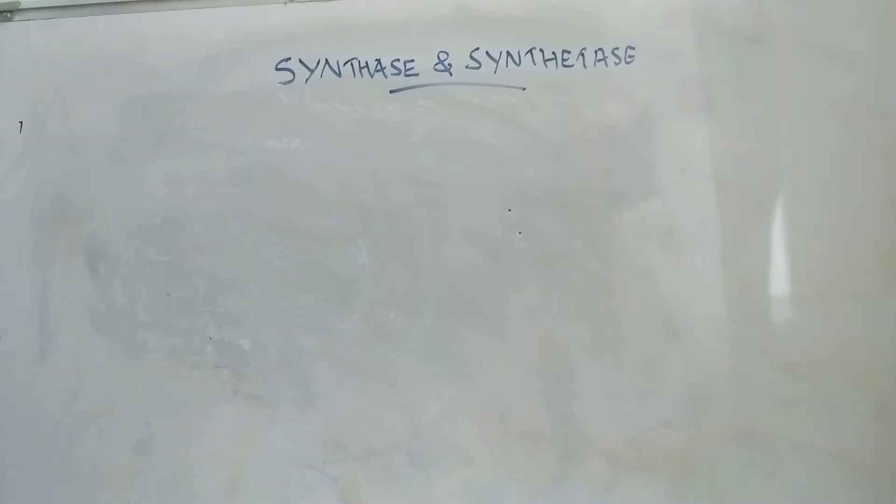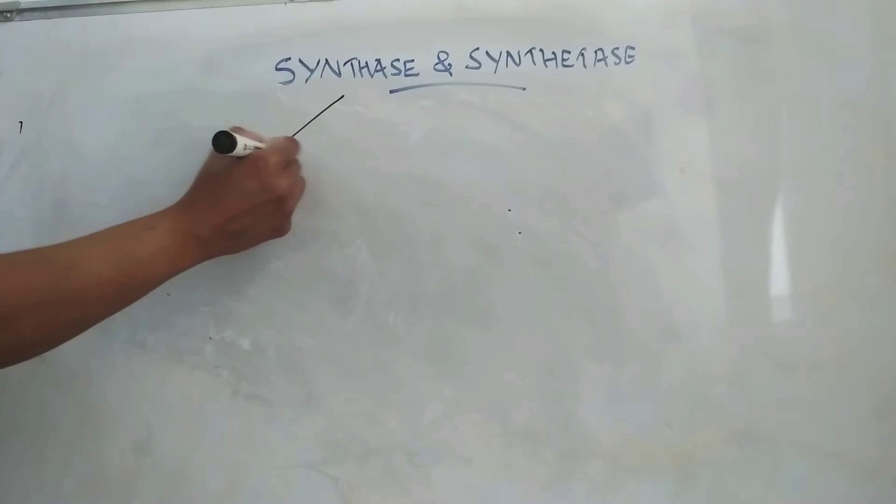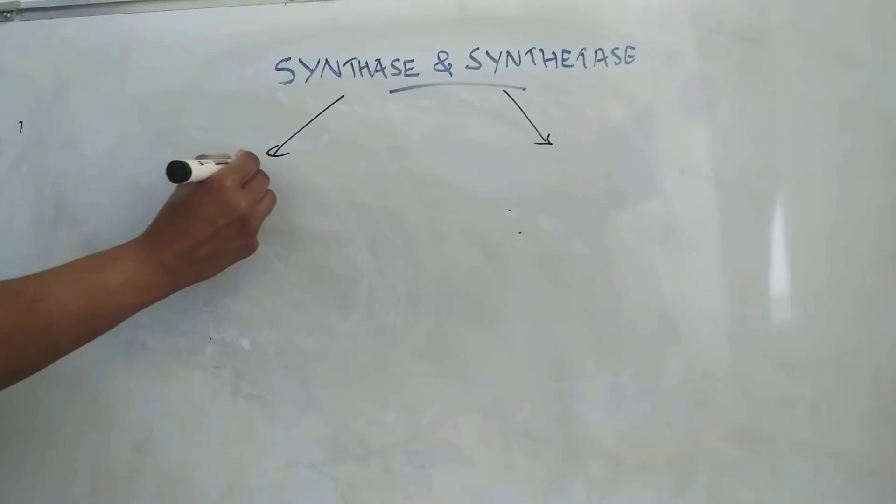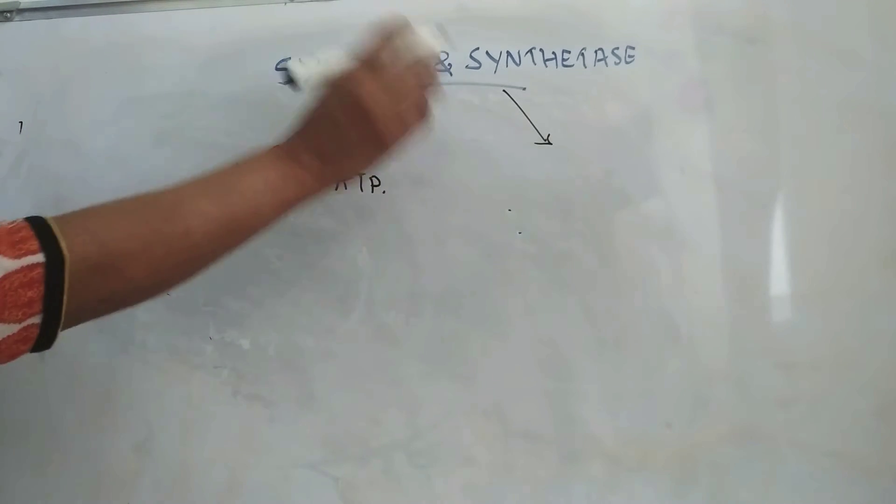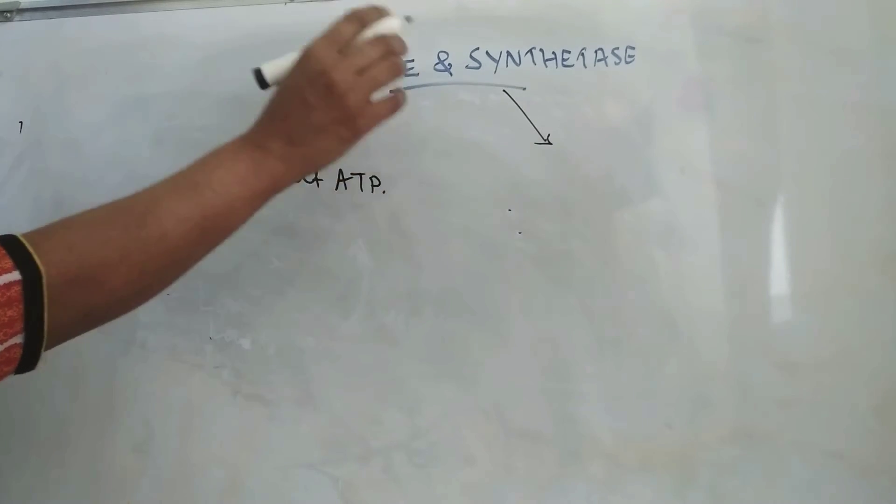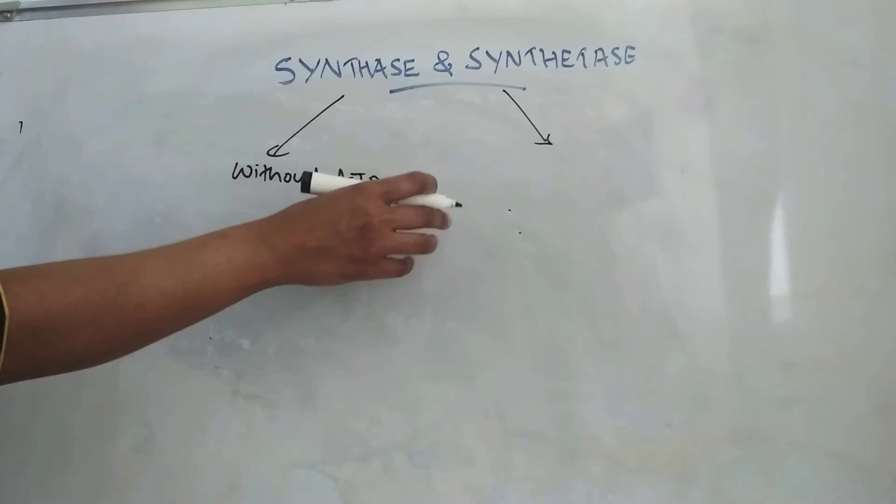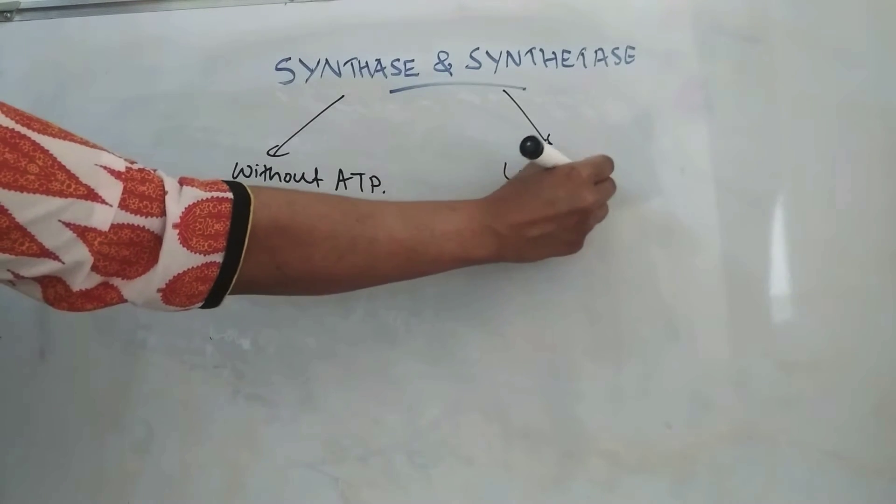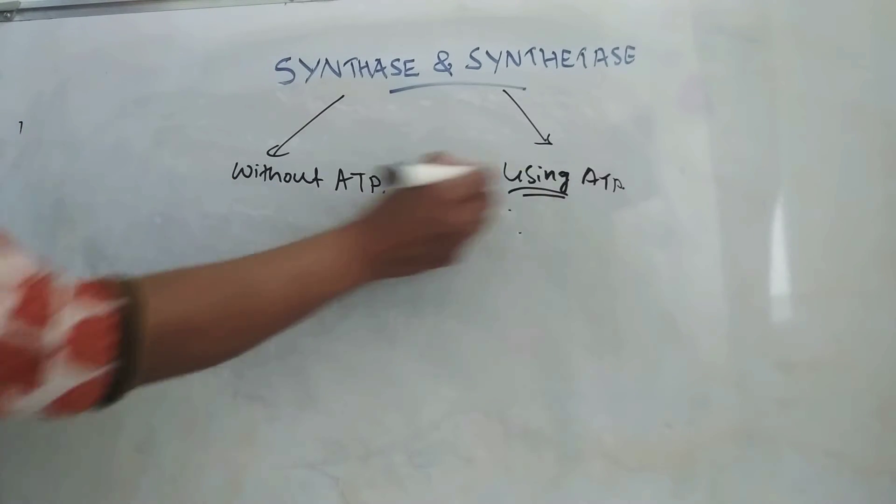Hello everyone, today we will discuss synthase and synthetase enzymes. Synthases are enzymes that catalyze the synthesis of a biological compound without ATP as a source of energy. They will not use ATP. But in the case of synthetases, these are enzymes that catalyze the synthesis of a biological compound using ATP as a source of energy.